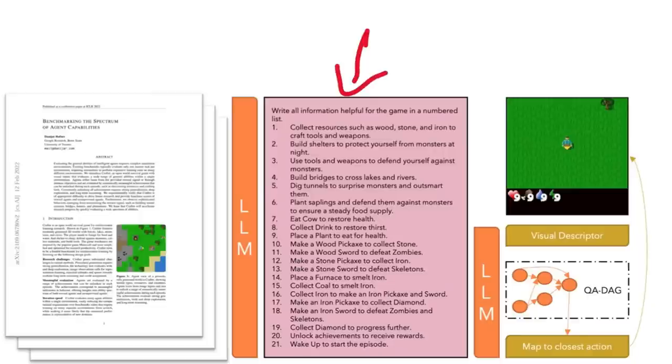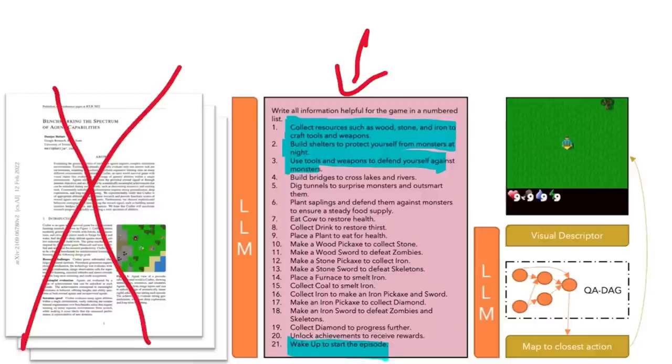Here we can see an example of what a final context string might look like, containing info like collect resources such as wood, stone, and iron to craft tools and weapons, build shelters to protect yourself from monsters at night, use tools and weapons to defend yourself against monsters, all the way down to wake up to start the episode. So that is the paper dealt with. We've gotten all we wanted out of it with this context string. The LLM should now have all the context it needs to actually know how to play the game.